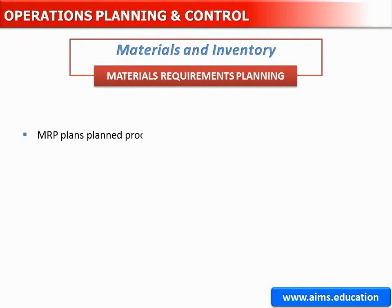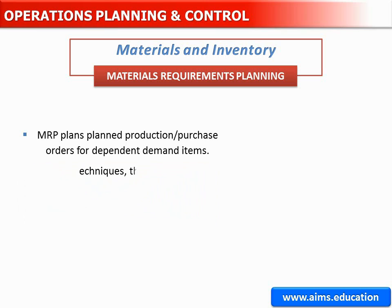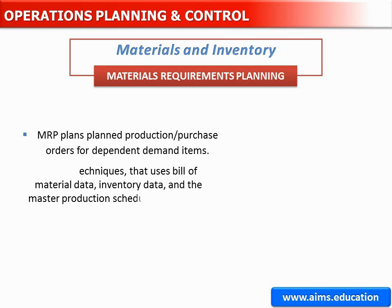Material requirements planning plans dependent demand items — the raw materials and components needed to produce finished goods for consumers. Material requirements planning is a set of techniques that uses bill of material data, inventory data, and the master production schedule to calculate requirements for materials.